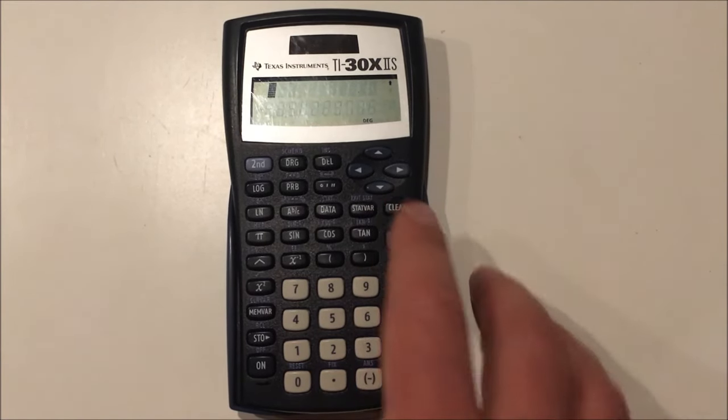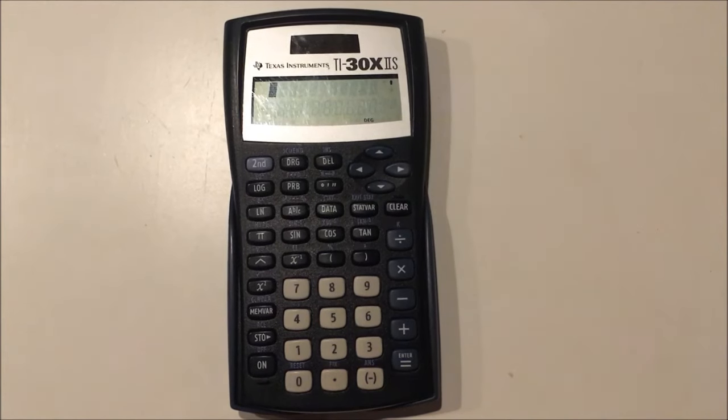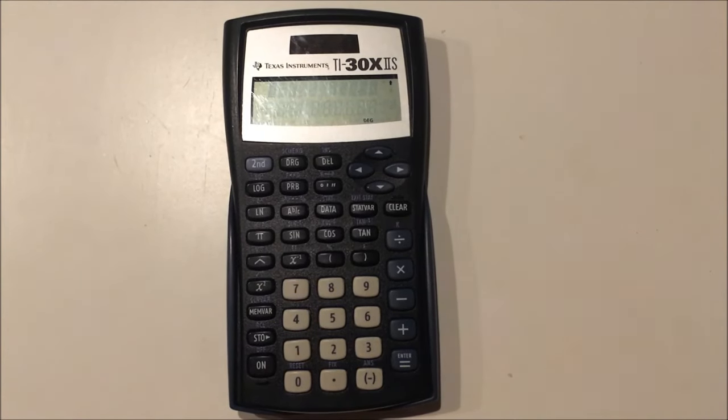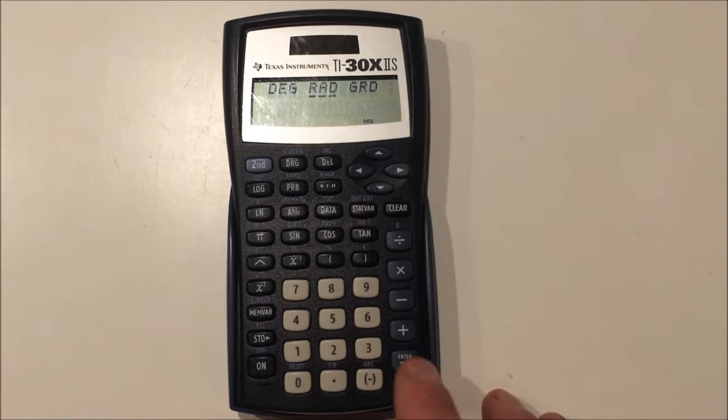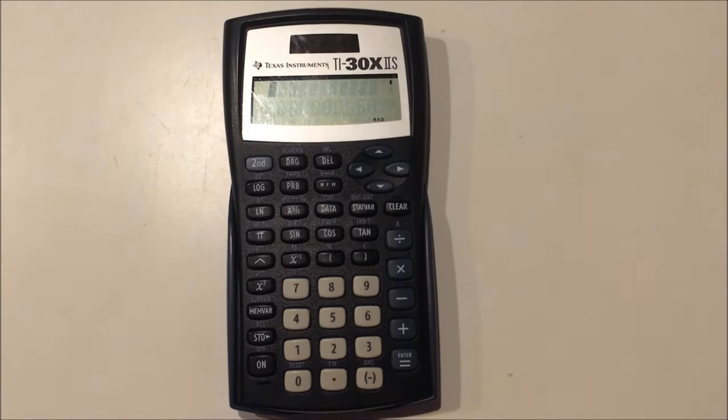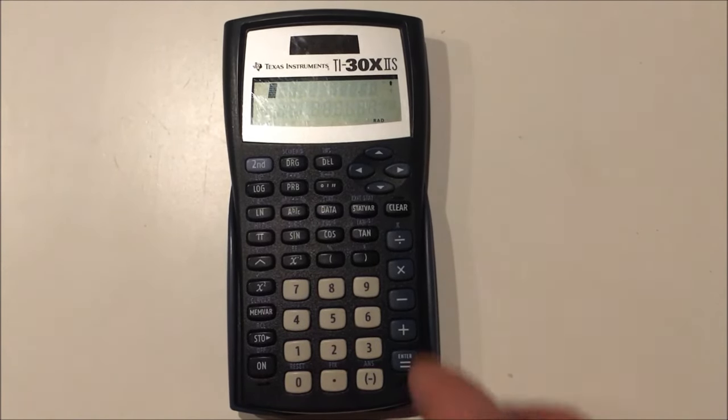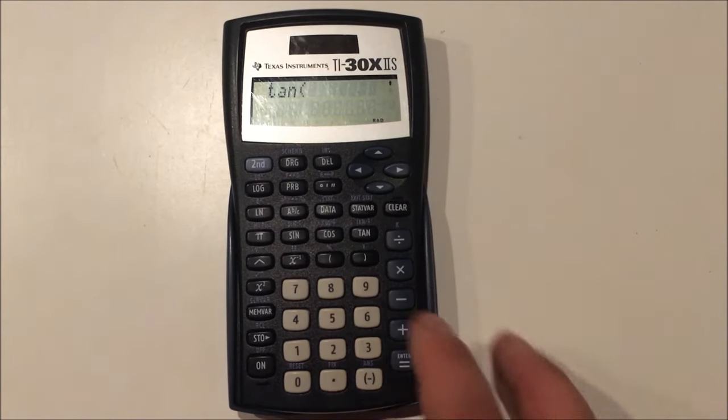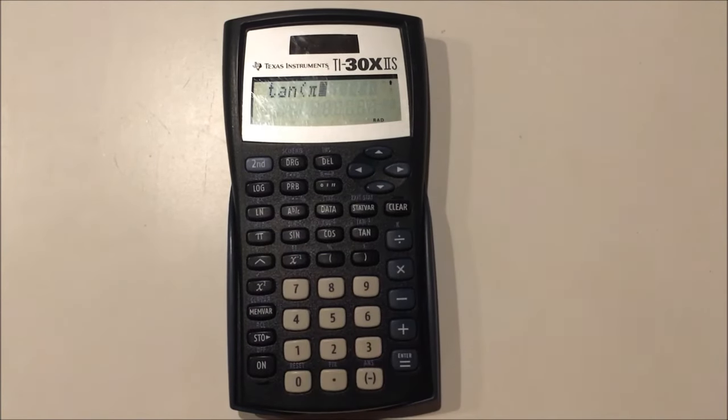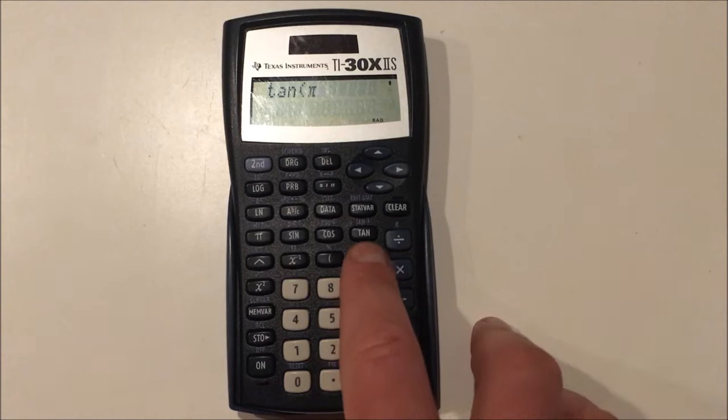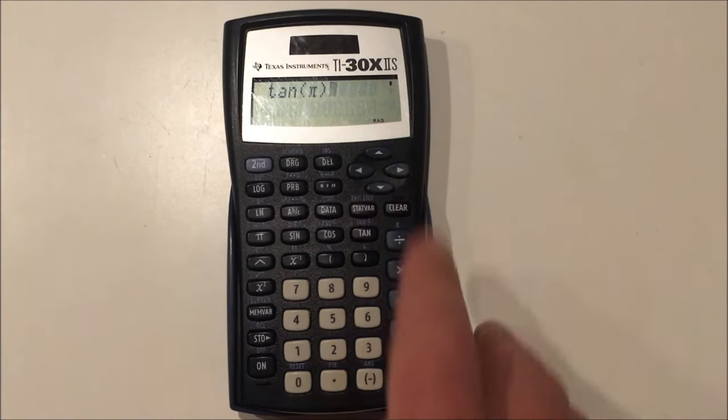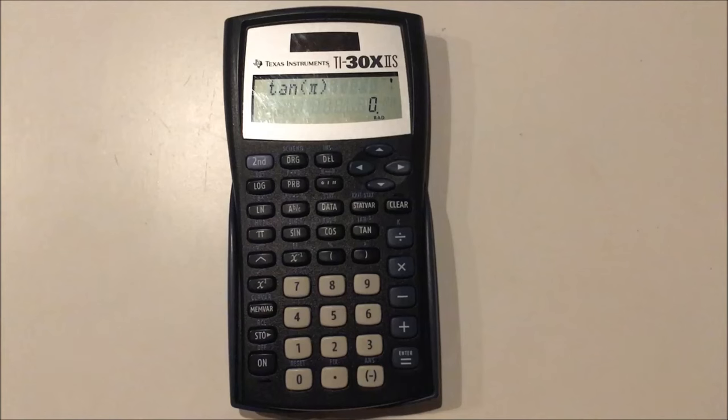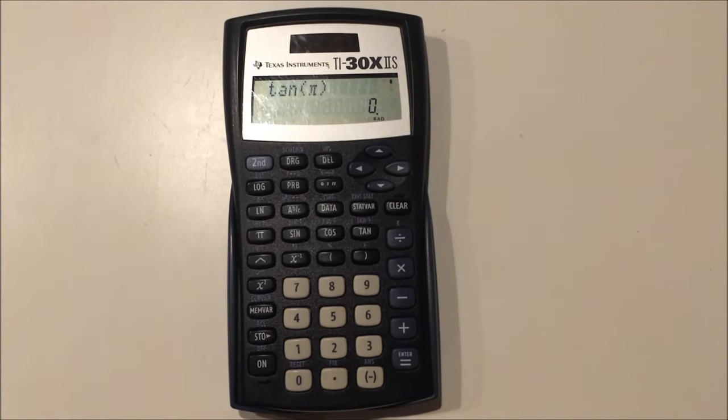Now, you can use pi in the trig functions as well, but as you know, if you've done any trig, you need to be in radian mode, because pi is an angle commonly used in radians. So let's say we want to evaluate the tangent of pi. We would just press tangent and then pi, making sure we're in radian mode, and we get 0.